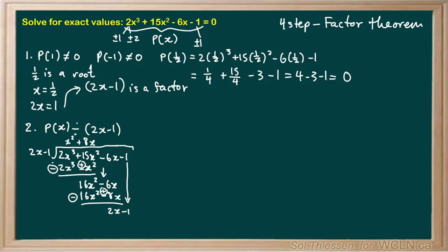Now I ask: what do I multiply 2x by to get 2x? The answer is 1. I multiply 1 times 2x minus 1, giving 2x minus 1 again, and subtracting — signs flip — so 2x minus 2x gives 0 and negative 1 plus 1 also gives 0. That's a remainder of 0, as expected, since 2x minus 1 is a factor. The quotient expression is already quadratic, so in step 3 — repeating steps 1 and 2 until we have a quadratic quotient — we don't need to do any further work. The quadratic quotient is x² plus 8x plus 1.